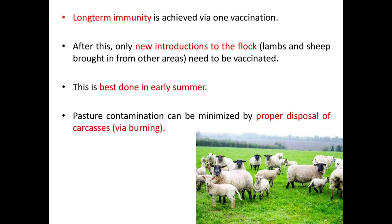Long-term immunity is achieved via one vaccination, and after this only new introductions to the flock — lambs and sheep brought in from other areas — need to be vaccinated. This is best done in early summer. Pasture contamination can be minimized by proper disposal of carcasses via burning.